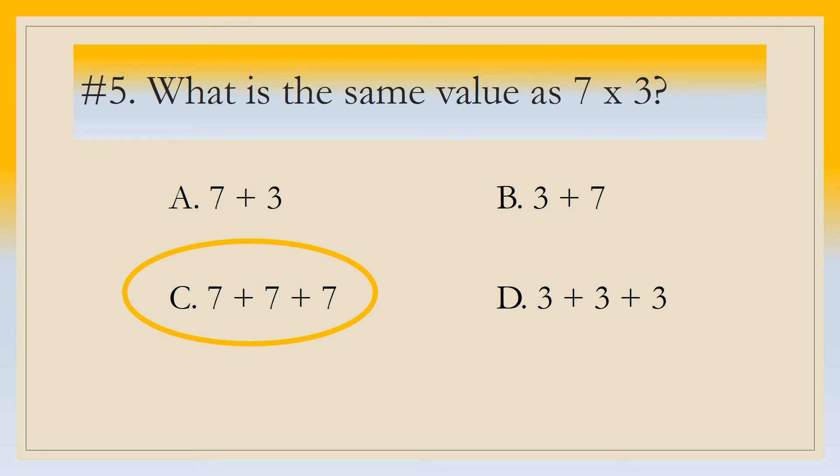Letter C, seven plus seven plus seven is the same value as seven times three. Do twenty cross crawls and then move on. Pause this video so you have time to exercise and then hit play when you're ready to continue.